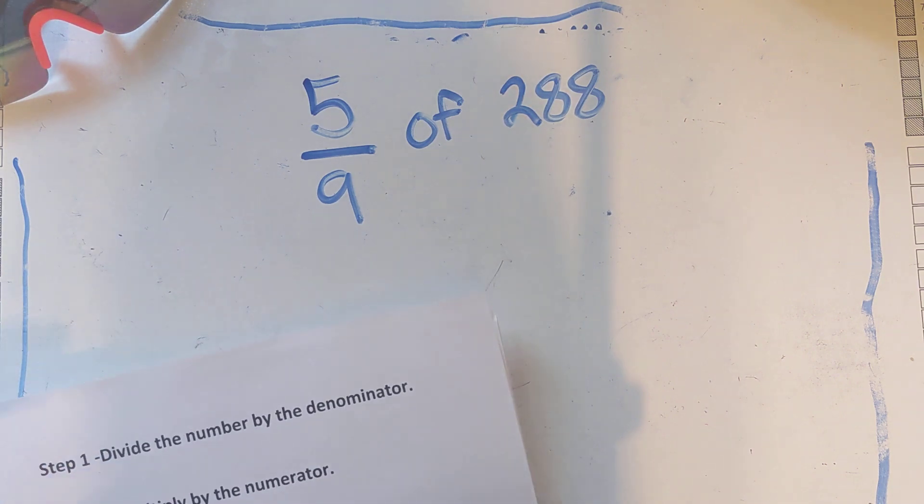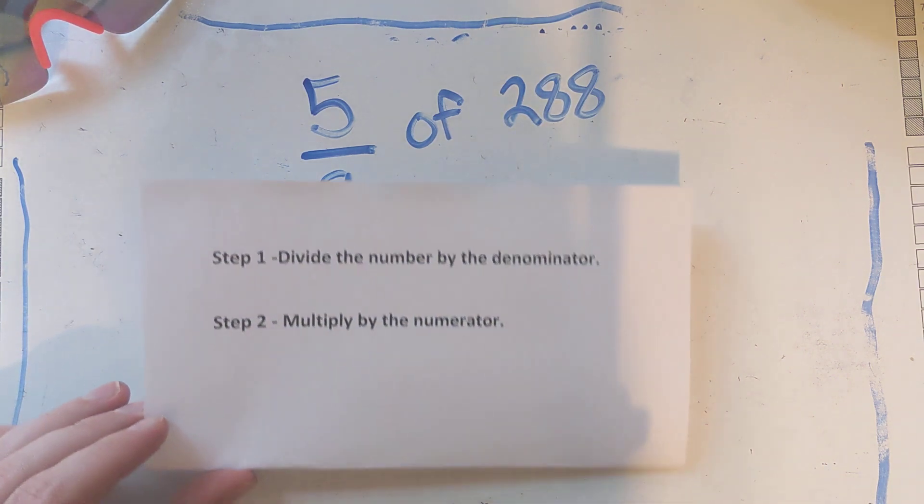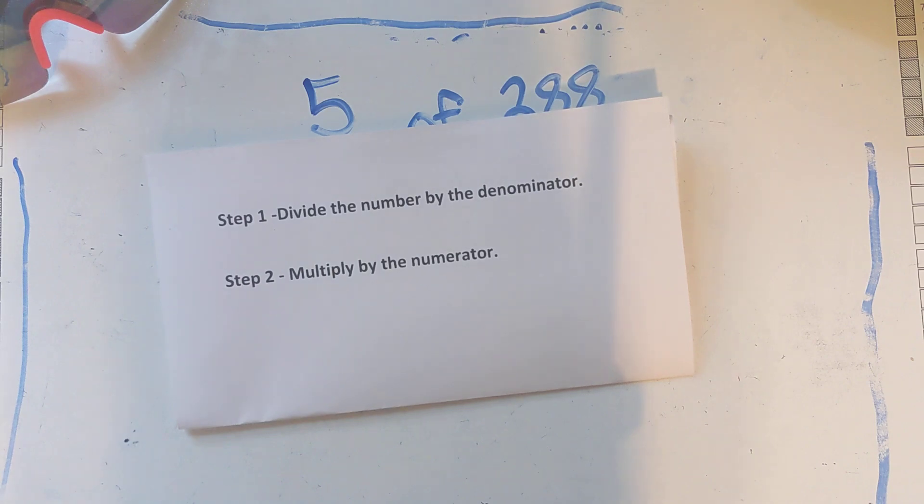The easy way of finding a fraction of a whole number. Step one: you divide the whole number by the denominator. Then you take that answer for step two and you multiply it by the numerator.